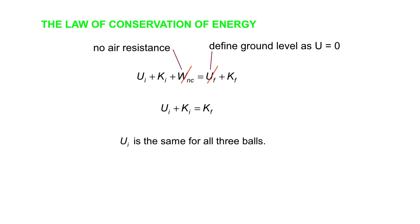We'll start expanding these various terms. Ui is the same for all three balls, because they all start out at the same position relative to our ground level. Ki is the same for all three balls, because they start off with the same speed. They have the same kinetic energy. So what does that mean? That means Kf has to be the same for all three balls, which means they all hit the ground with the same speed.